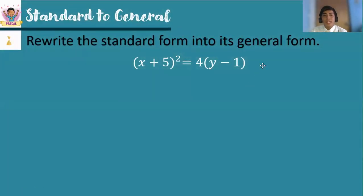Now, let us rewrite the given standard form of each of the following conics into their general form. Let's have the first example. The quantity (x+5)² = 4(y-1). So all you need to do is to square the left side, square the binomial. So how do we square the binomial? We square the first term.